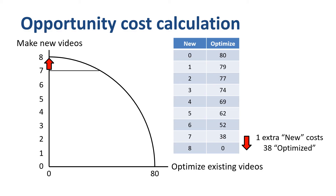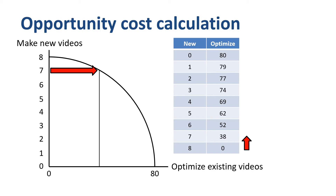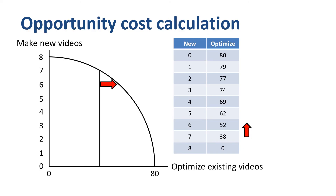To go from 7 to 8 new videos, you have to give up 38 optimized existing videos. We can also use opportunity costs on the other axis. To go from 0 to 38 optimized videos, you only have to give up 1 new video — the opportunity cost is 1 new video. To go from 38 to 52 optimized videos, an increase of 14, you have to give up another new video, etc.